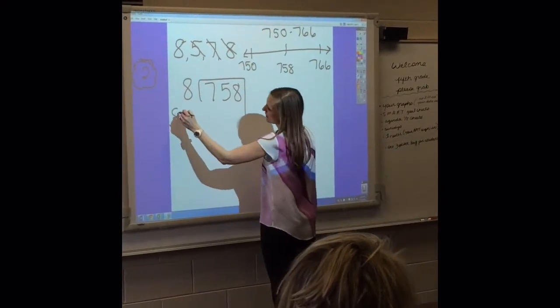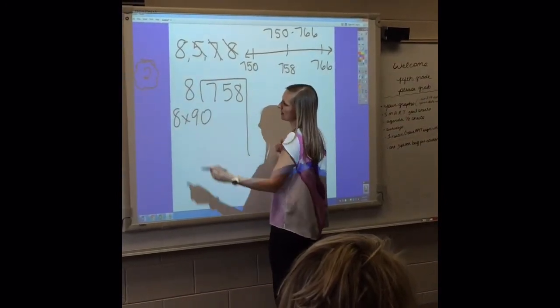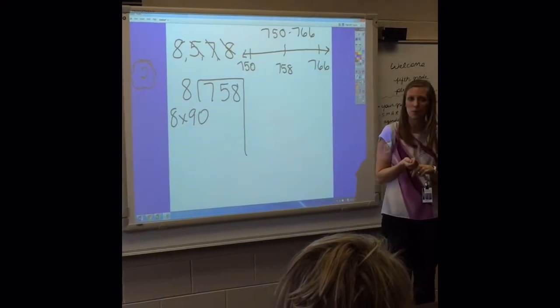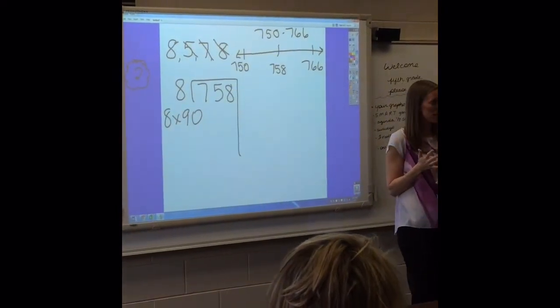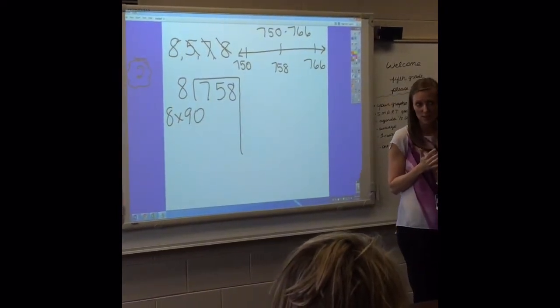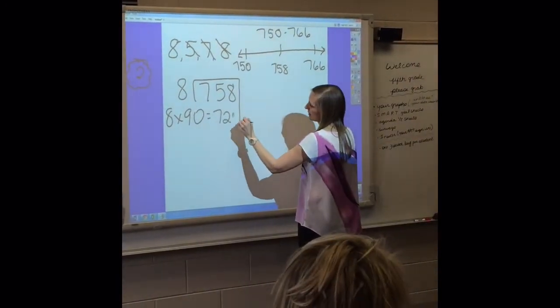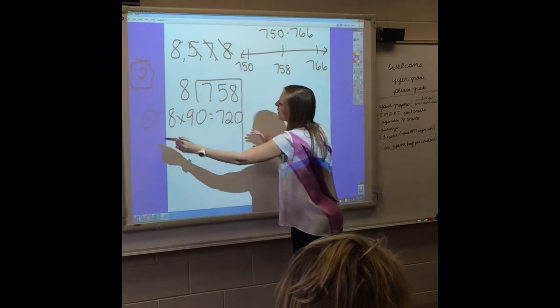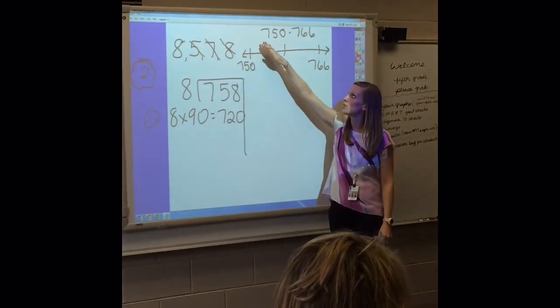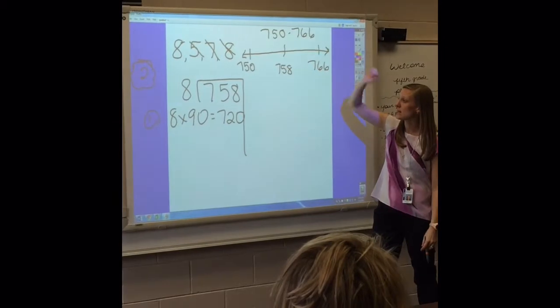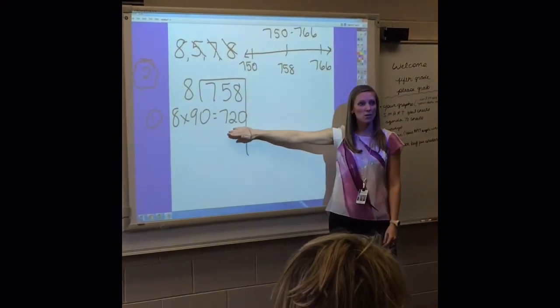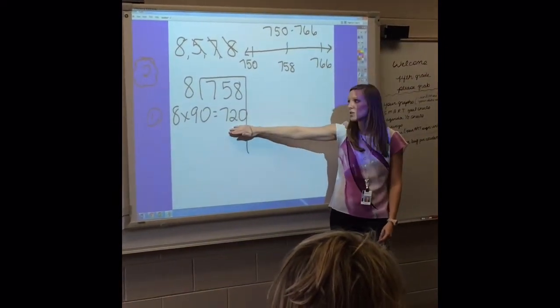90? Okay, first we will do 8 times 90. That is a very pretty number because you're working with friendly multiplication. So who can tell us what the answer is? 720. All right, that was our first shot. Looking at 720 and checking our range from 750 to 766, are we too high or too low? Too low. We are too low.